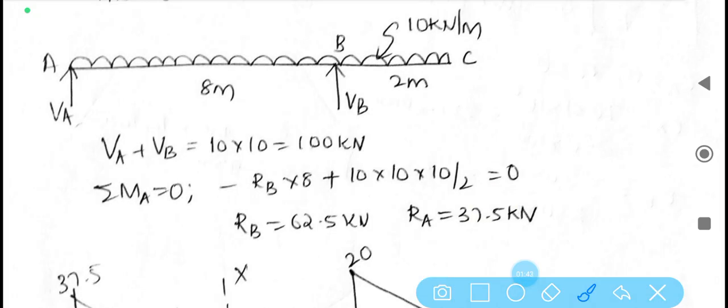Next we shall calculate what is called as reactions. This is the simple overhanging, that is single overhanging beam. Va plus Vb is equal to total load is 10. The total length is 8 plus 2, 10 into 10 is 100 kN. Apply the basics of mechanics conditions, that is equilibrium conditions. Find out what are the reactions at point A and B.